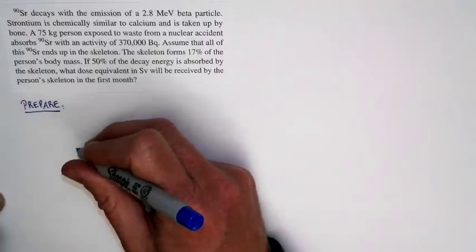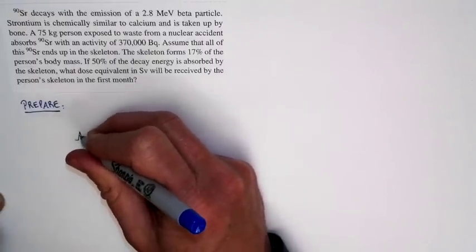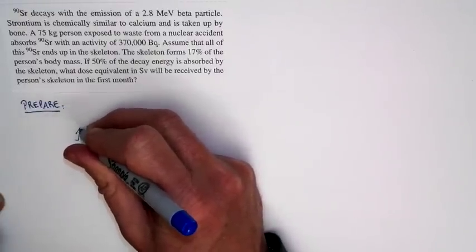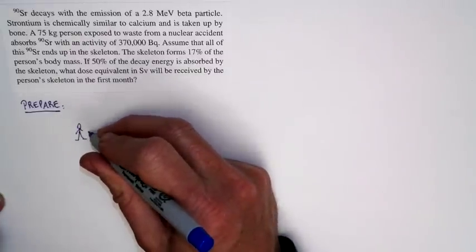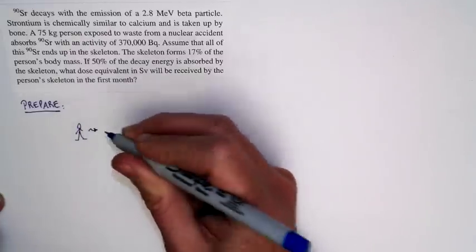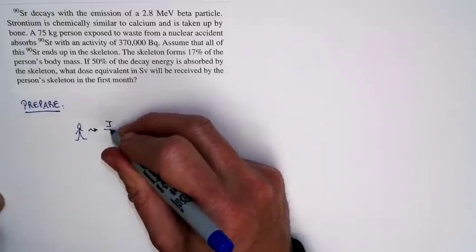So here's the situation: I have a certain amount of radioactive isotopes being absorbed by the person's skeleton, and we want to know what dose equivalent it is. Remember, dose, which we need in order to find dose equivalent, is joules per kilogram.